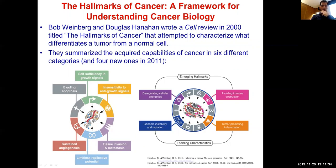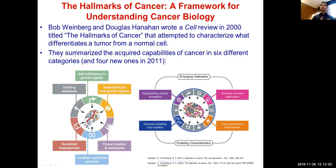What are these capabilities? First, to avoid apoptosis: most rogue cells launch a suicide mission and apoptose, but cancer must figure out a way to avoid that. Cancer also must become self-sufficient in growth signals — not only not dying but actually multiplying.